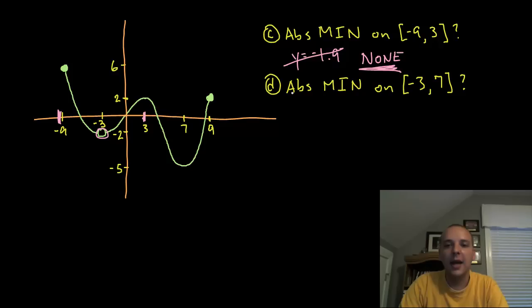And then lastly, the absolute minimum on the interval negative three to seven. Absolute minimum from negative three right here to seven, that's right there. It looks like right here at this endpoint at seven we would get an absolute minimum. That's the lowest y value in the interval and it is defined there, so we would get an absolute min of negative five.